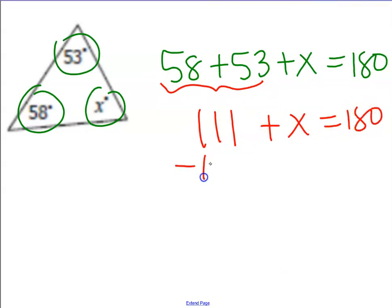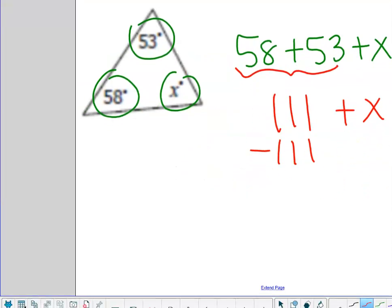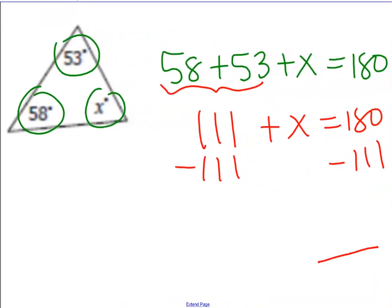Then I use my subtraction property of equality to get my letter x all by itself.